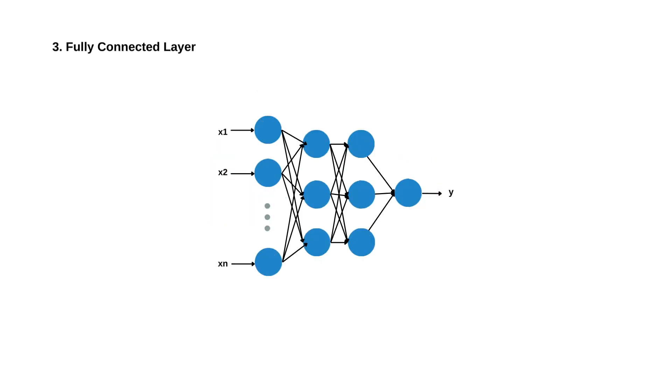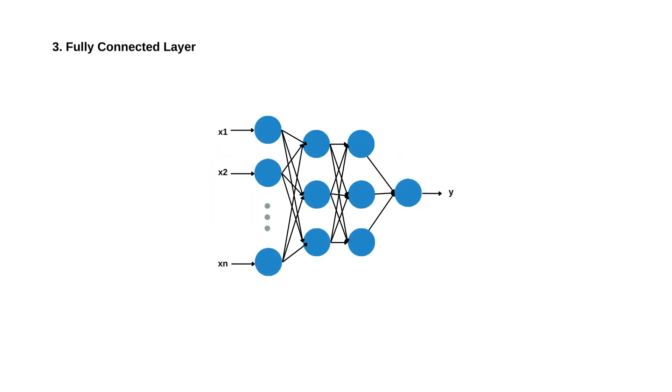Fully connected layers, also known as dense layers, come at the end of CNN architecture. They serve as the decision-making part of the network and are responsible for producing the final output. Let's delve deeper into the fully connected layers.